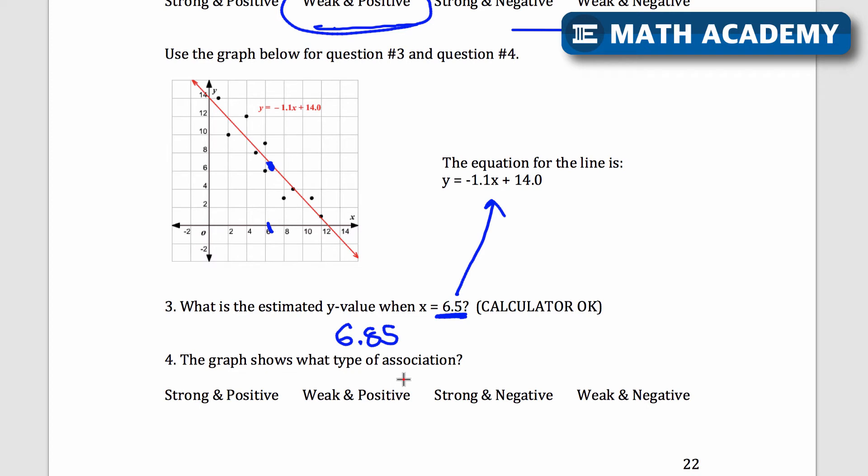The graph shows what type of association? Well on this one the dots are all pretty close to that line so that's going to be a strong association and it's a negative slope so it'll be strong and negative right there.